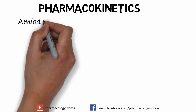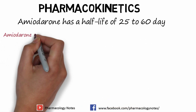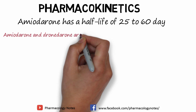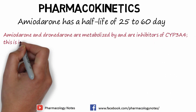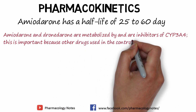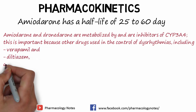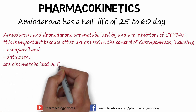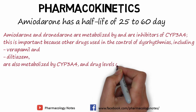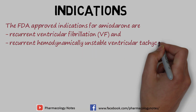Regarding pharmacokinetics: amiodarone has a half-life of 25 to 60 days. It has a very long half-life, so dose adjustments must be considered accordingly. Amiodarone and dronedarone are metabolized by the liver and are inhibitors of CYP3A4. This is important because other drugs used in the control of dysrhythmias, including verapamil and diltiazem, are also metabolized by CYP3A4.